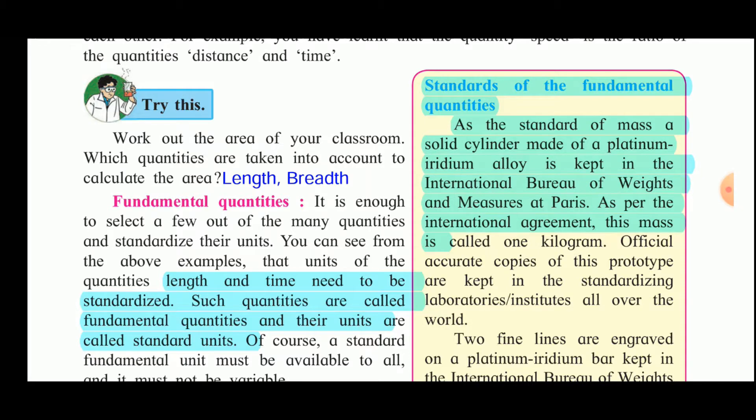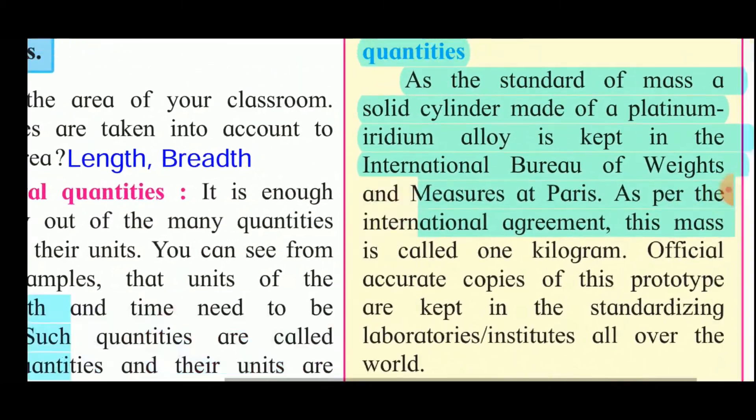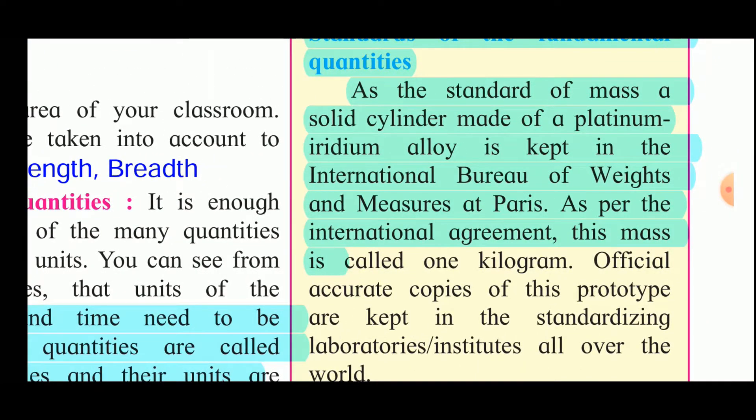Standards of the fundamental quantities. As the standard of mass, a solid cylinder made of platinum iridium alloy is kept in the International Bureau of Weights and Measures at Paris. As per the international agreement, this mass is called one kilogram. Official accurate copies of this prototype are kept in the standardizing laboratories or institutes all over the world. The cylinder which is made up of platinum iridium alloy is taken as 1 kg and all other masses are compared with it.